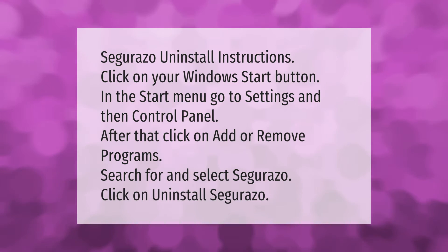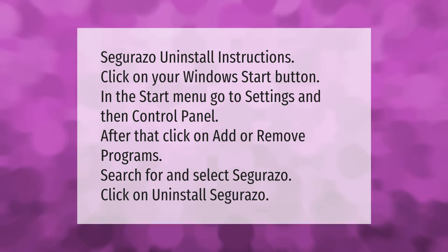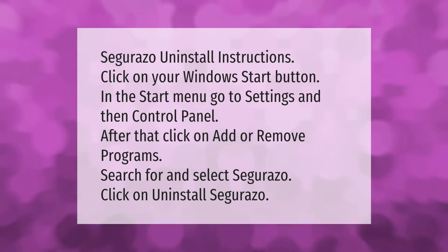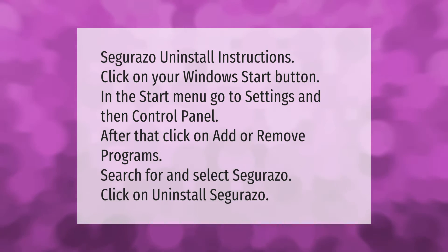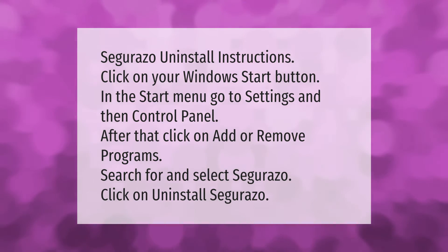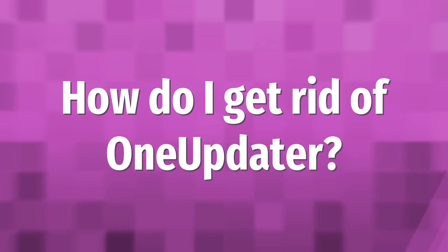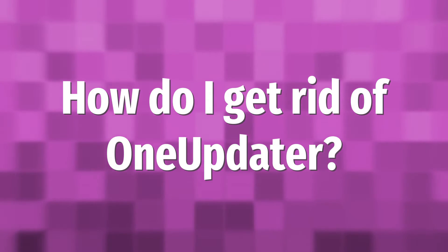Cigarazo uninstall instructions: click on your Windows Start button, in the Start menu go to Settings and then Control Panel. After that, click on Add or Remove Programs, search for and select Cigarazo, then click on Uninstall Cigarazo.